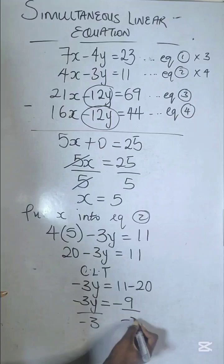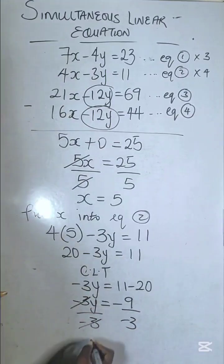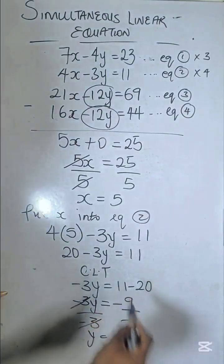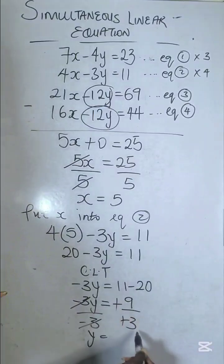Divide by -3 on both sides. y equals -9 divided by -3. Minus divided by minus is plus, so y = 9/3 = 3.